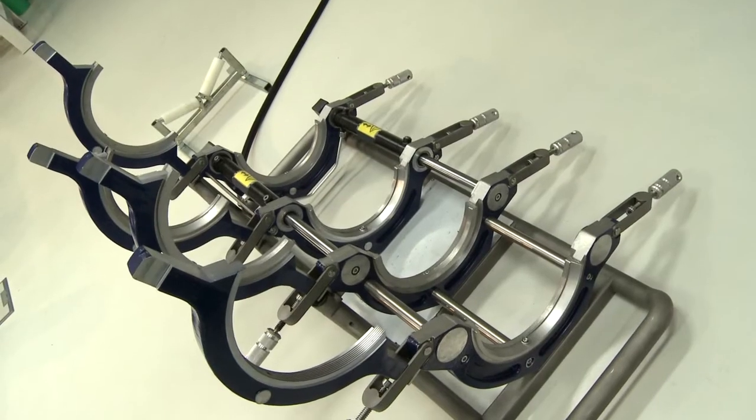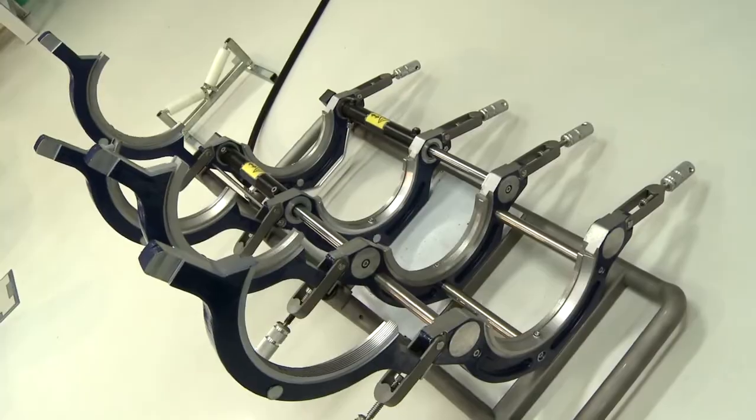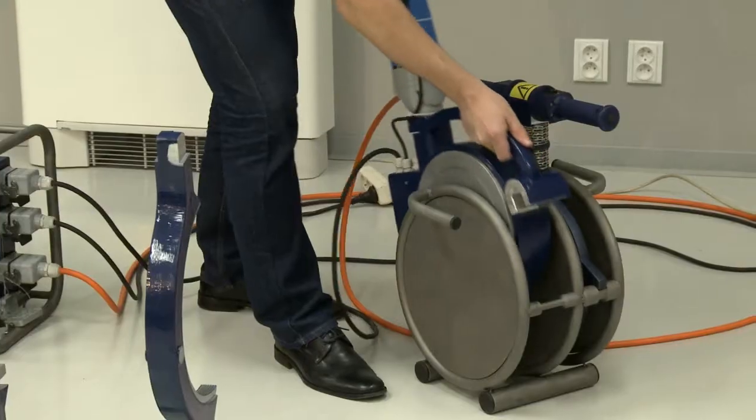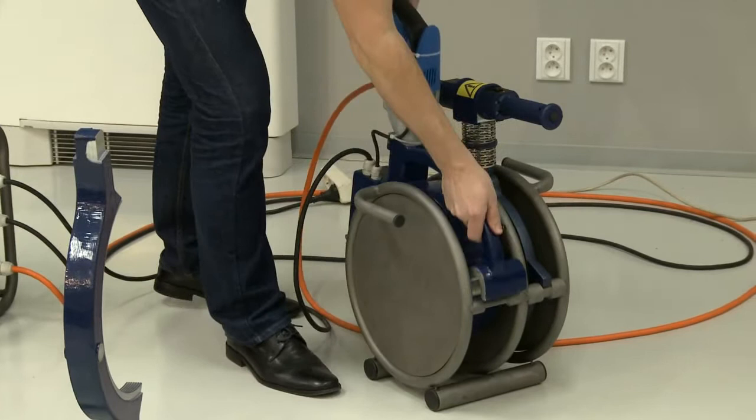Butt welding requires a special welding machine which is equipped with a pipe and fitting clamping frame, a hydraulic control unit, planing plate, end facer, and a heater.